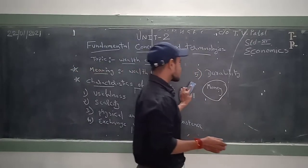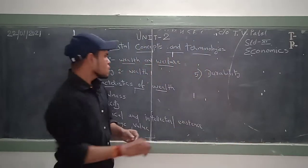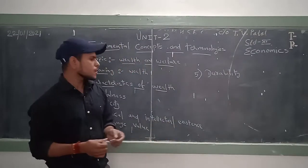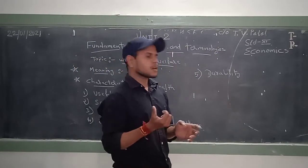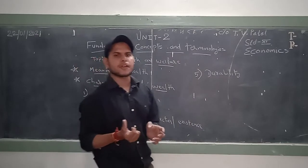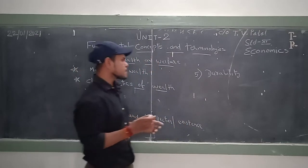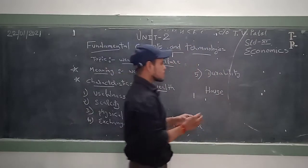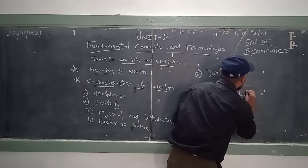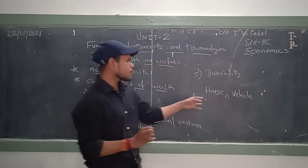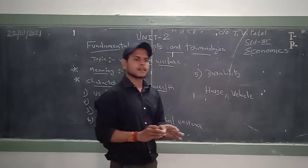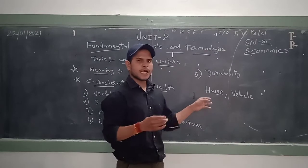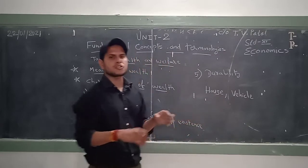The first characteristic of wealth is usefulness. Anything which is useful to humans or an individual is known as wealth — which has the capability or usefulness to satisfy human wants. For example, a house: house is useful because we get shelter from it — from the rainy season, from summer, from winter.